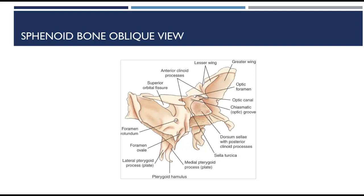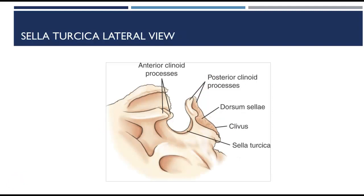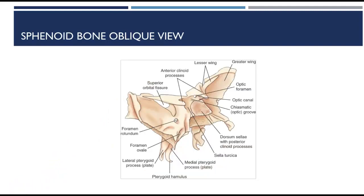Looking at the sphenoid bone in an oblique view: the lesser wings extend laterally from the body in a triangular shape, ending medially in the two anterior clinoid processes. The posterior clinoid processes extend superiorly from the dorsum sella. The greater wings extend laterally from the sides of the body and form a portion of the floor and sides of the cranium. Three pairs of small openings in the greater wings allow passage of certain cranial nerves: the foramen rotundum, the foramen ovale, and the foramen spinosum.